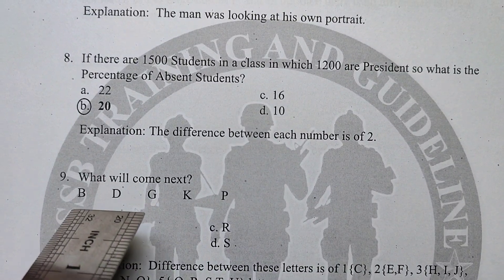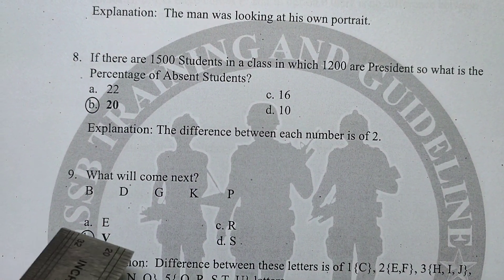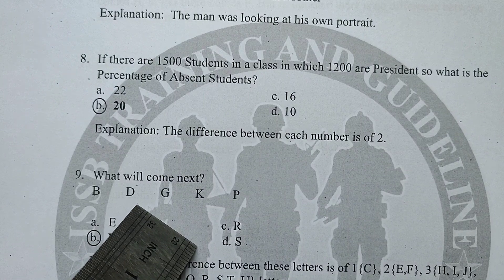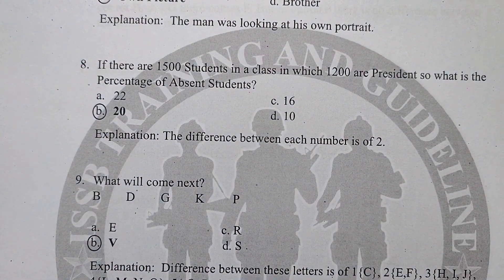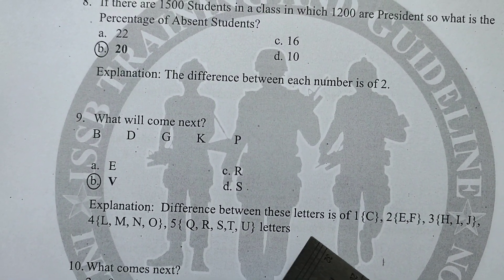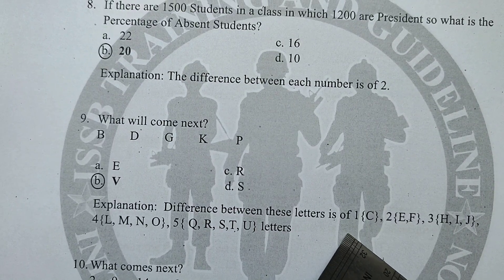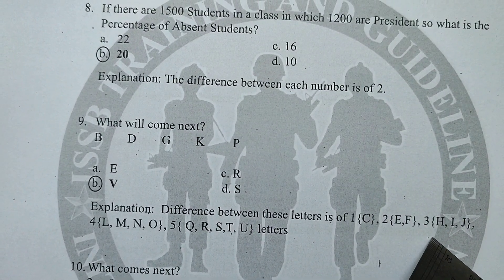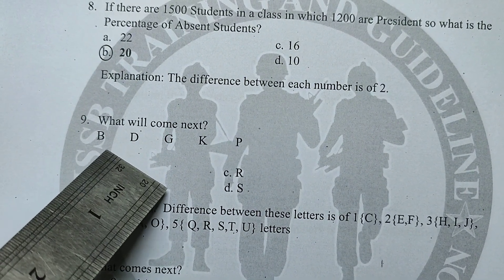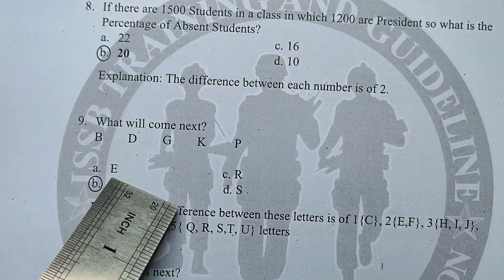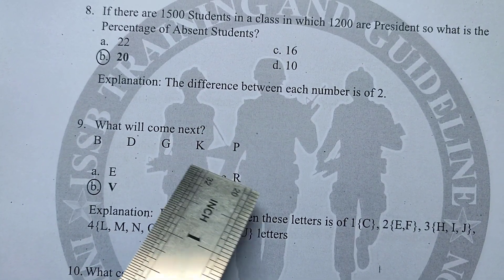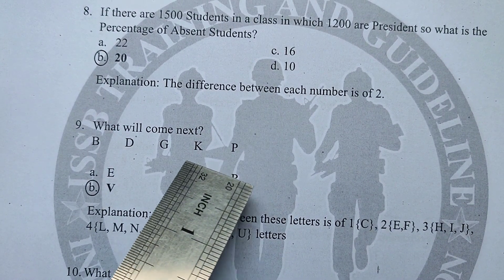Next question: what will come next in this letter series — C, then D, E, F, then H, I, J, then K? Let me explain the differences between these letters. Starting with C alone, then skipping 1 letter to get D, E, F — that is 3 letters. Then skipping letters to H, I, J. There are missing letters between each group.